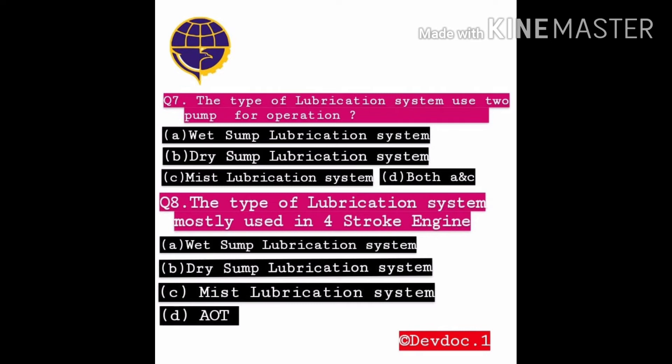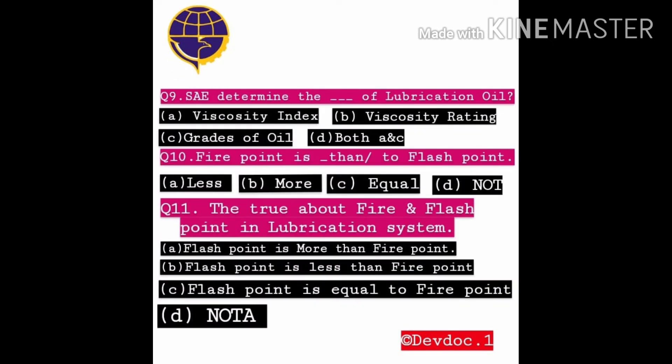Question No. 8: The type of lubrication system mostly used in a 4-stroke engine — Option A: Wet sump lubrication system, B: Dry sump lubrication system, C: Mist lubrication system, D: All of these. You will have to comment your answer in the comment box. Ninth question: What determines the dash of lubrication oil? Option A: Viscosity index, B: Viscosity rating, C: Grade of oil, D: Both A and C.